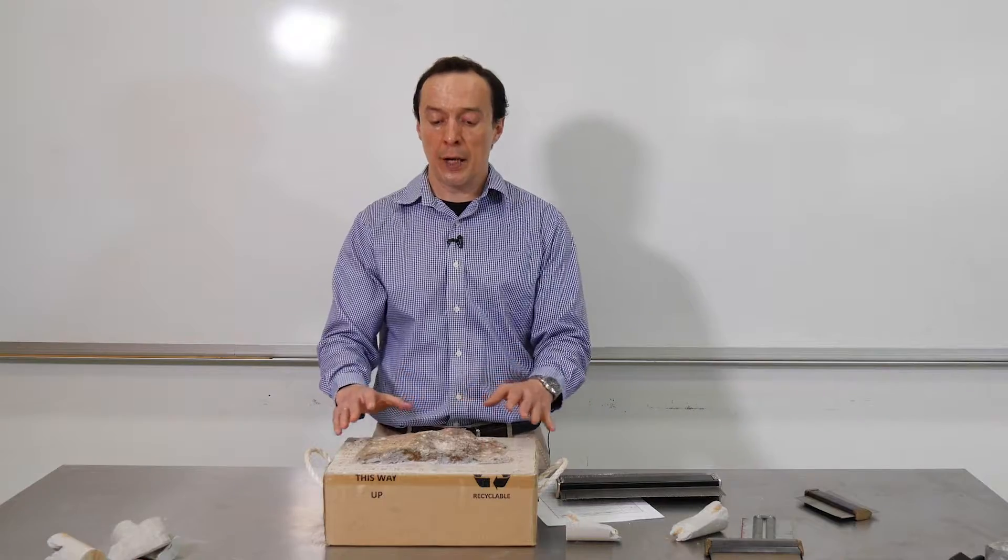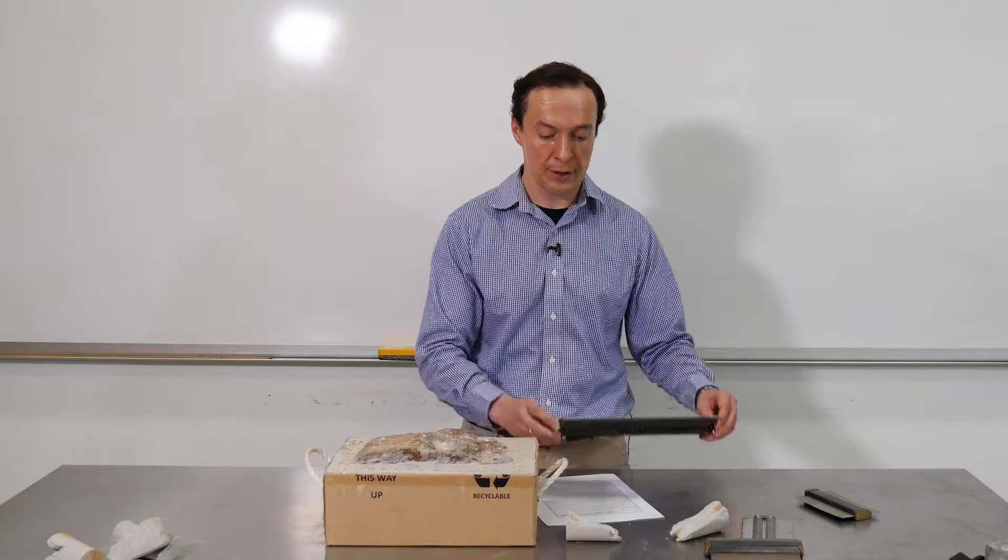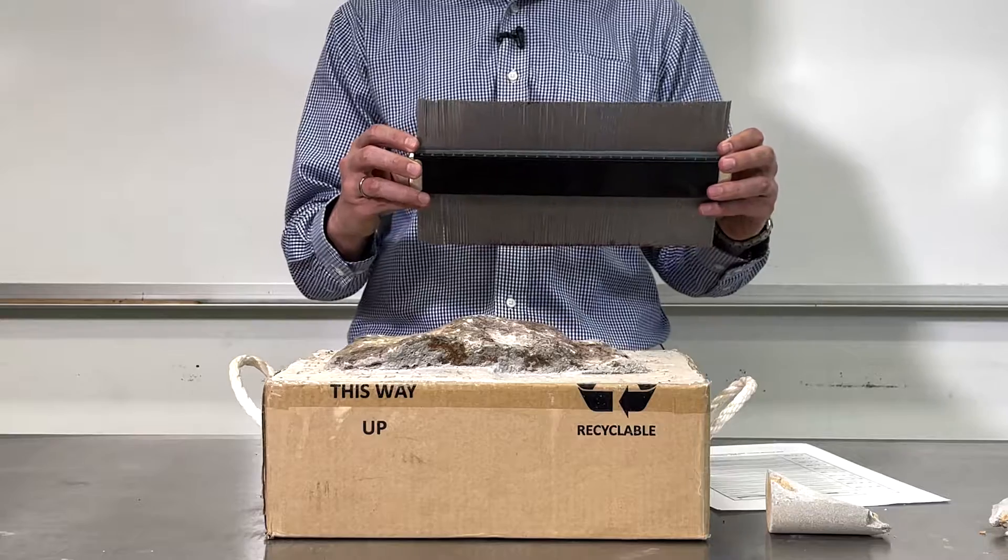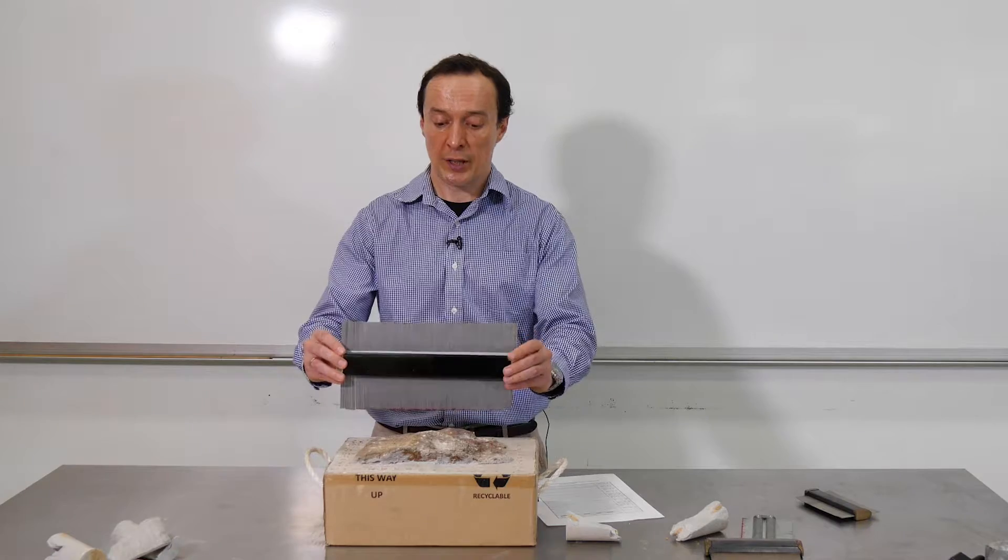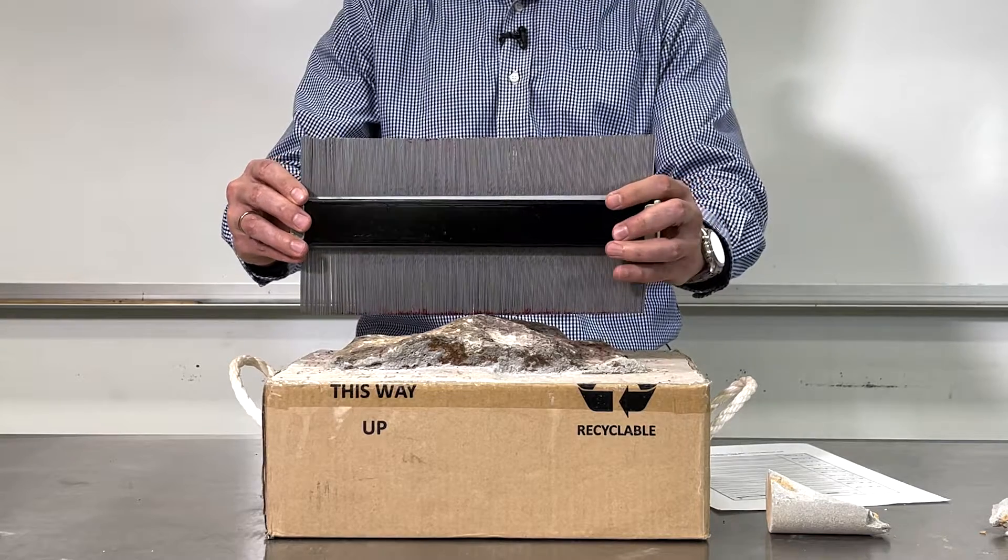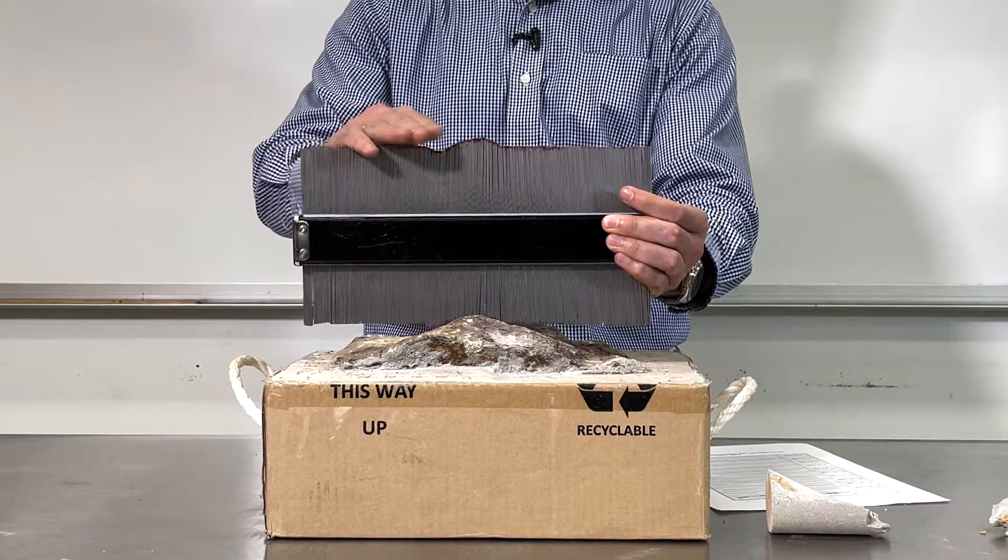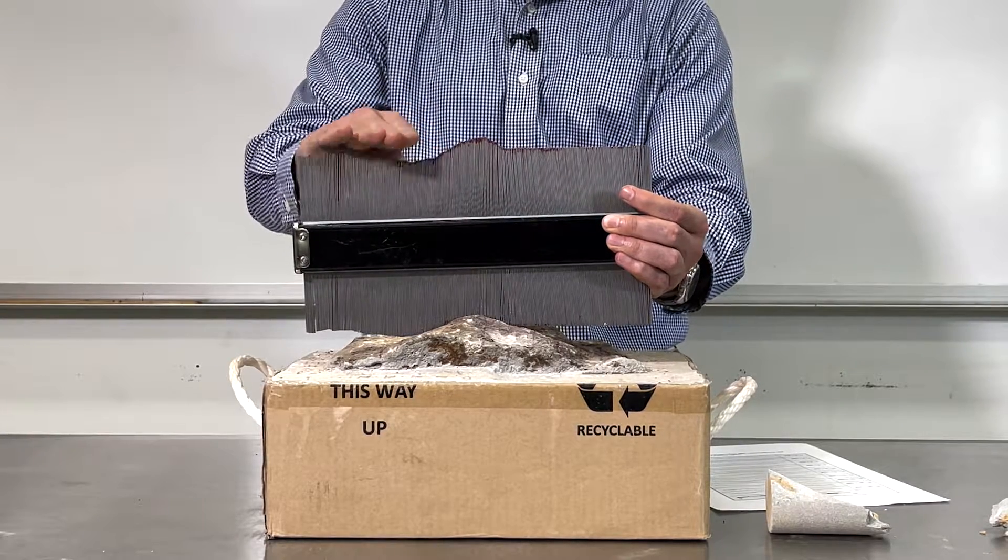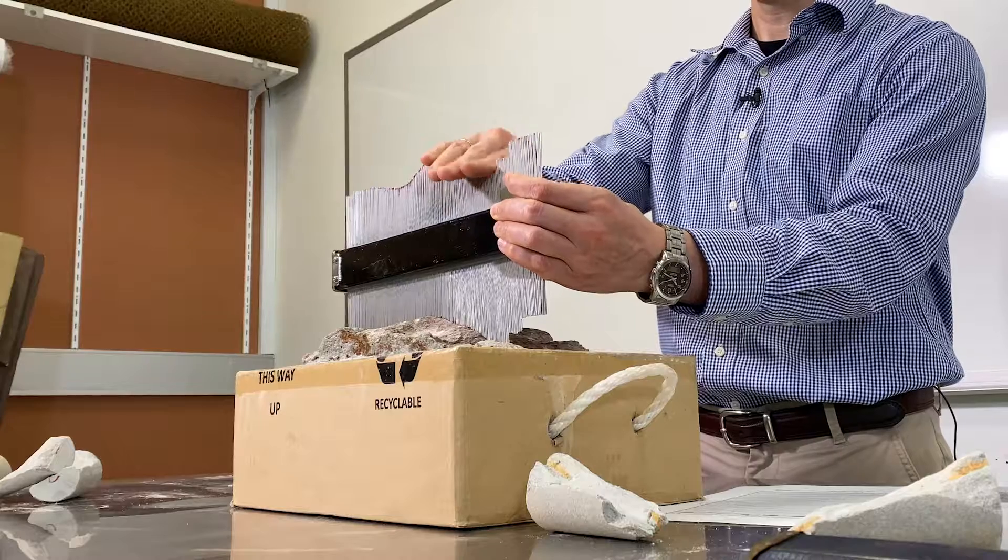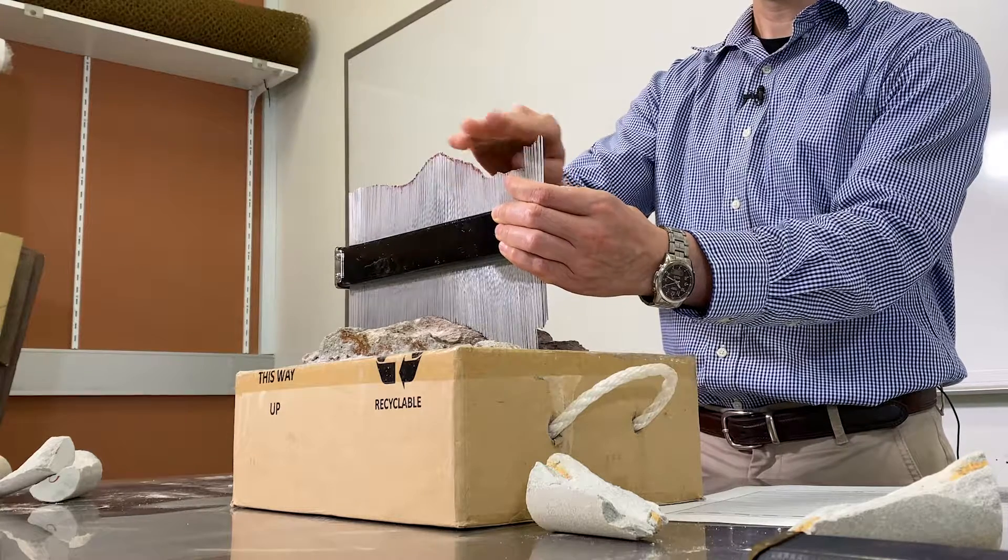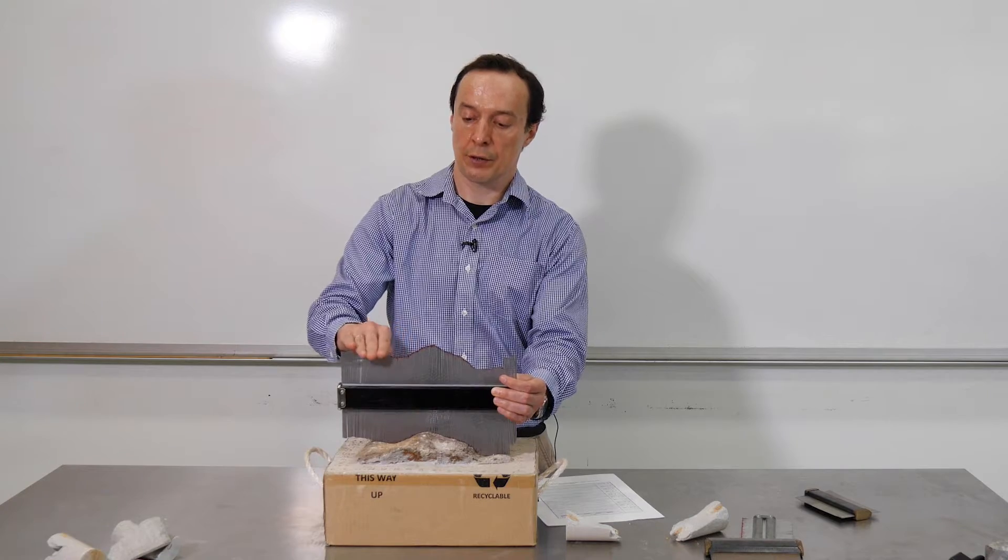So to estimate the roughness of the surface, we're going to use this device, which is called the Barton comb. It will measure the profile of the rock surface. What we'll do is just press it against the rock surface like this. And then you see these pins, we're going to press the pins down.